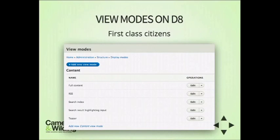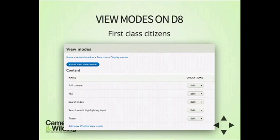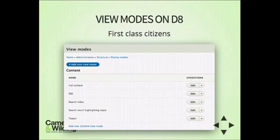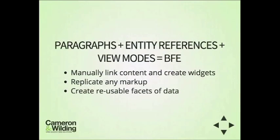In Drupal 7, adding view modes was difficult — you had to create an info hook and do it through code. In Drupal 8, view modes are first-class citizens. There's a view modes interface where you can add view modes, configure which fields are available, create a template, and use it within your HTML structure. So essentially, Paragraphs, entity references, and view modes are best friends. You can manually link content, create widgets, replicate your desired markup, and create reusable facets of the data.